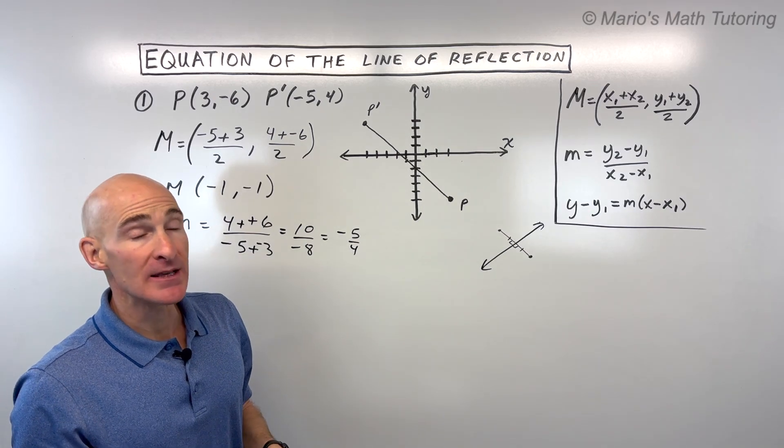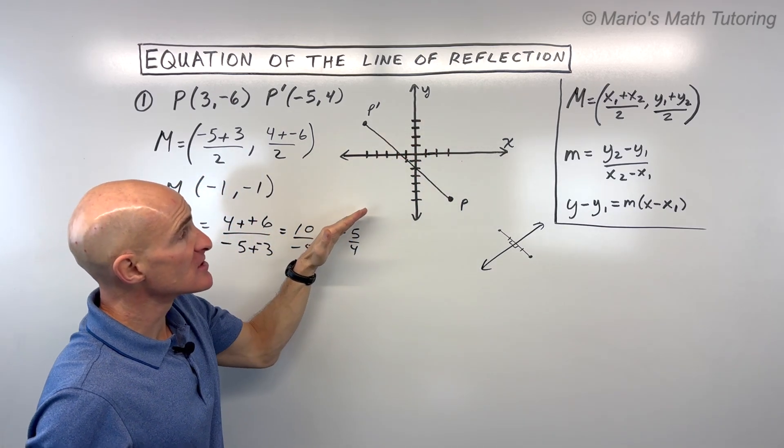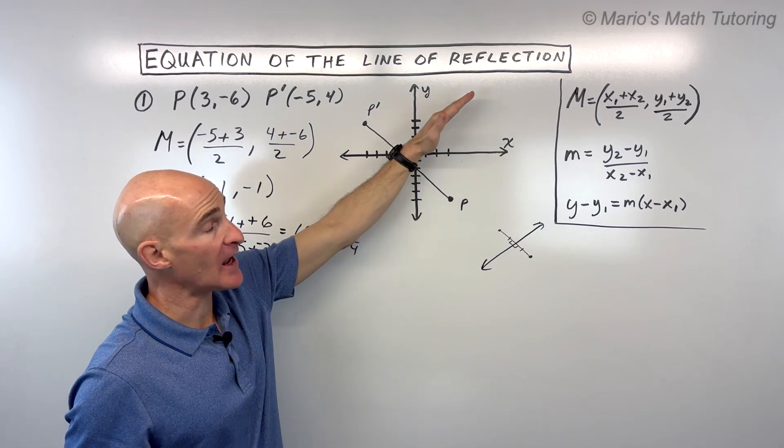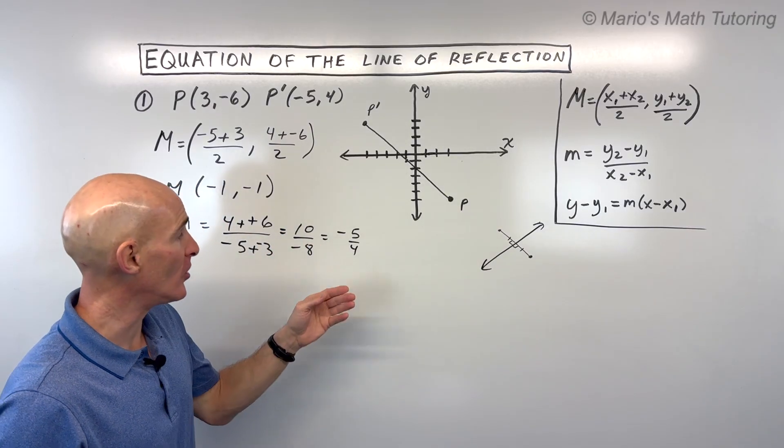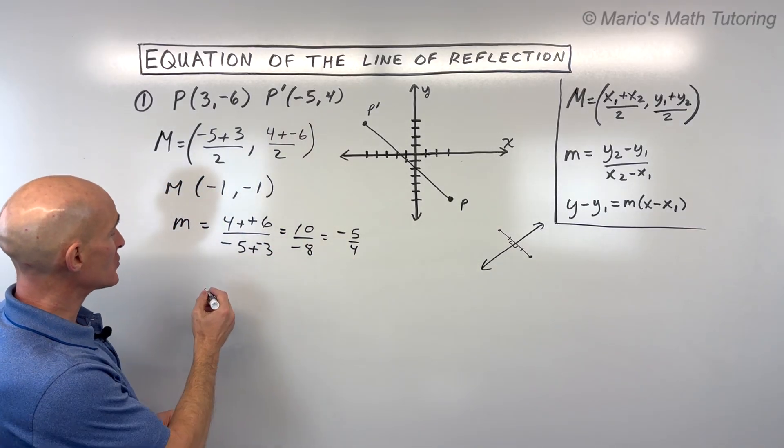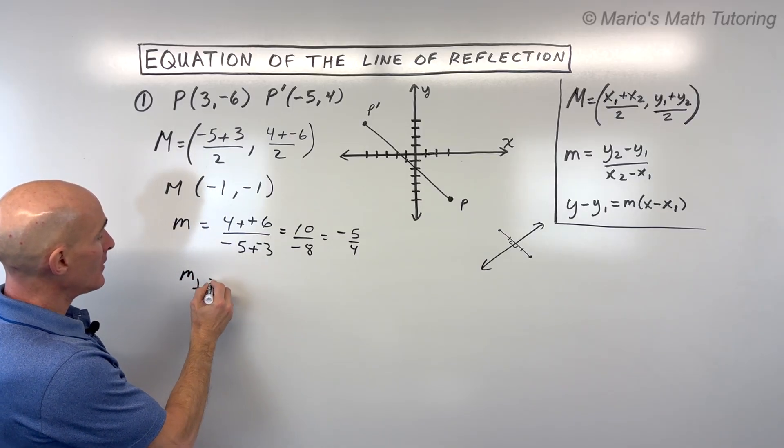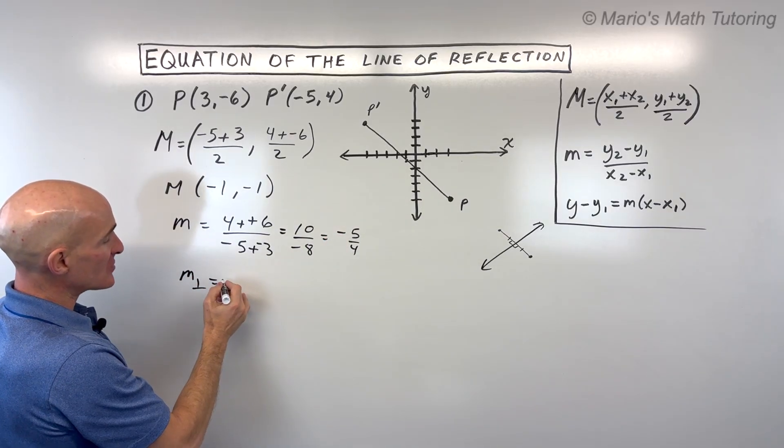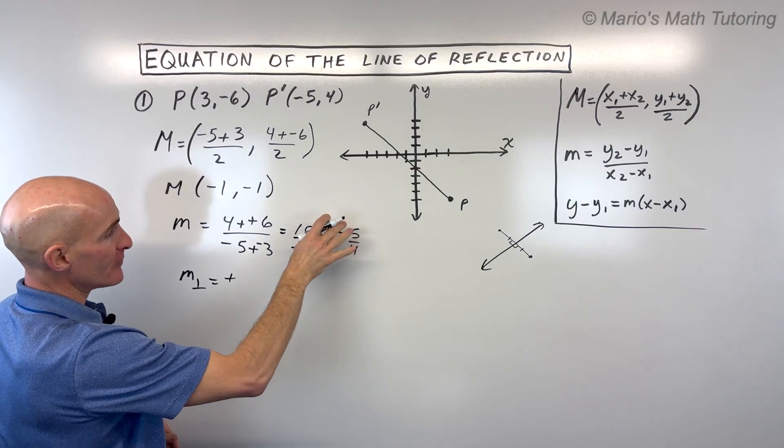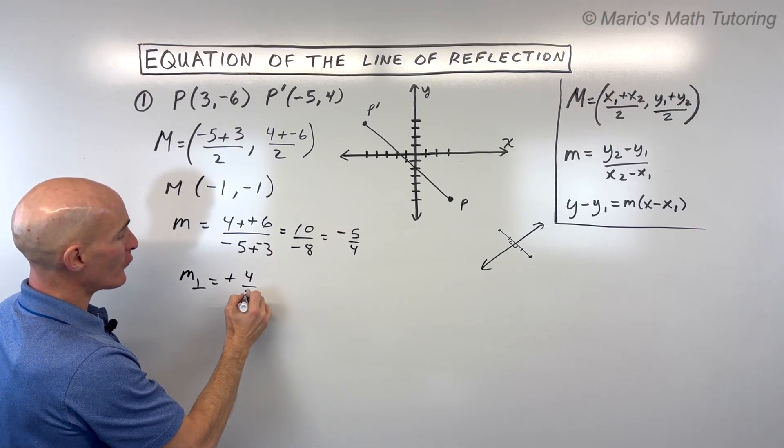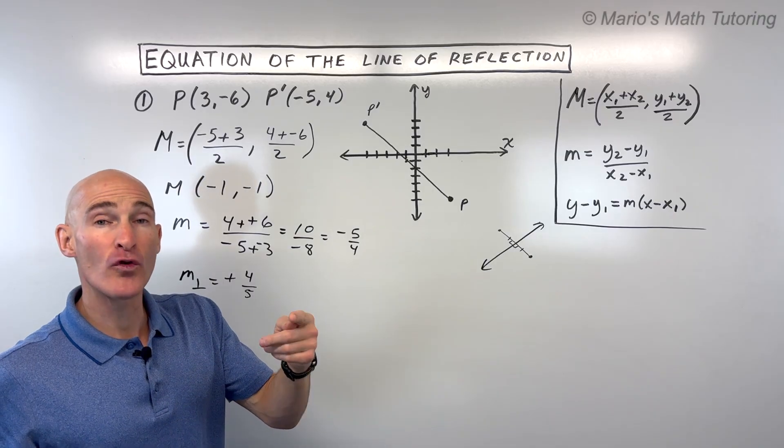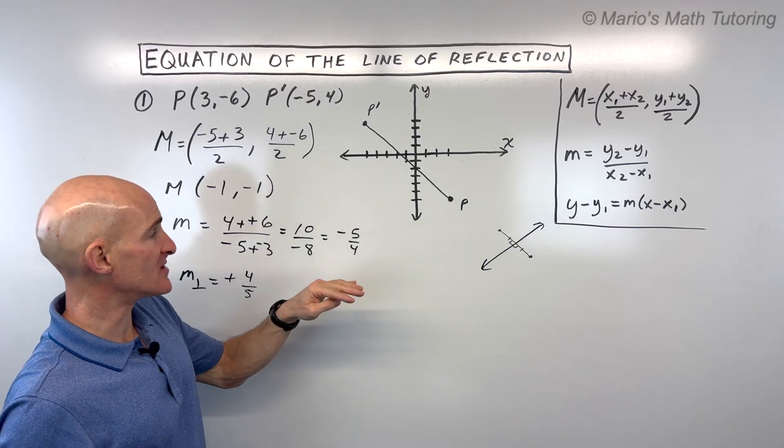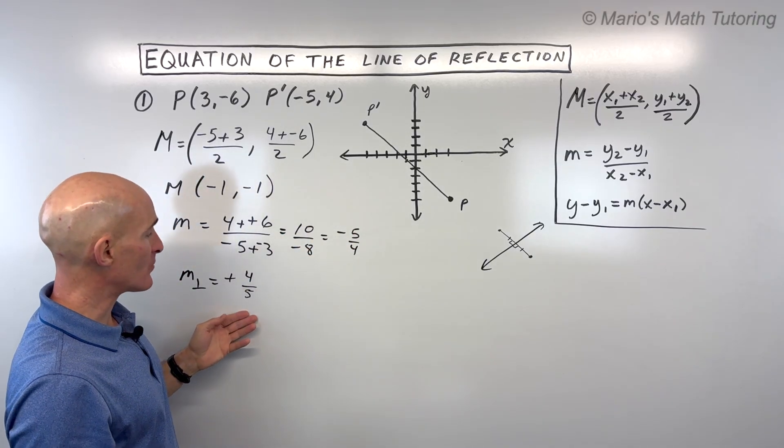But what we want is the perpendicular slope. So it forms a right angle. And to find the perpendicular slope, we take the opposite reciprocal of this slope here. So the opposite reciprocal means that it's going to be the opposite sign. So it's going to be positive. I'm going to flip that fraction over. That's going to be 4 over 5. Now, if this was a whole number like 4, you can think of that as like 4 over 1 because anything divided by 1 is itself. And then take the reciprocal.